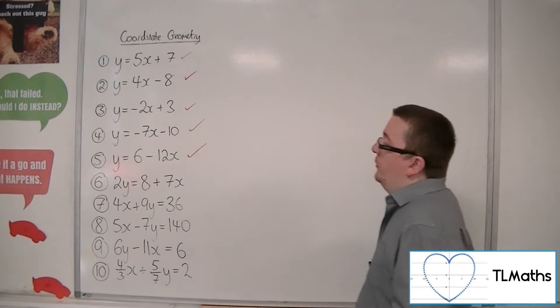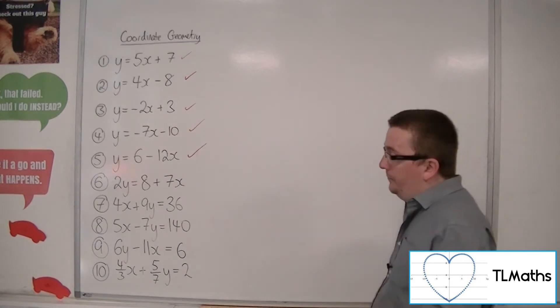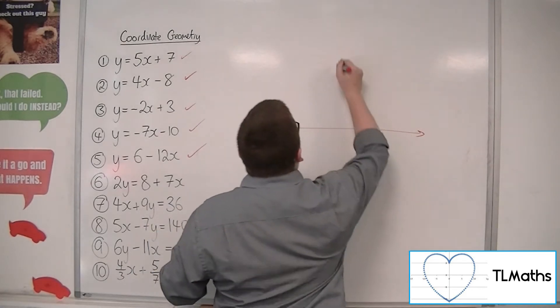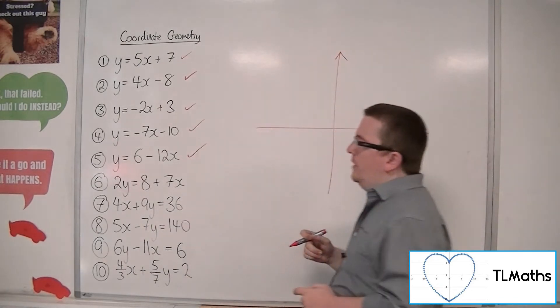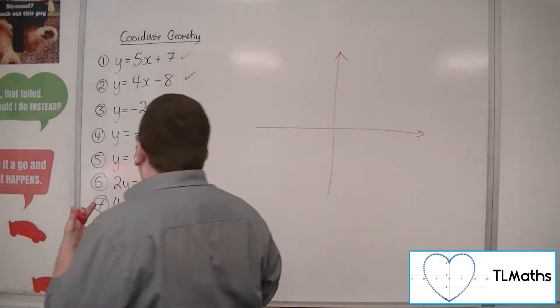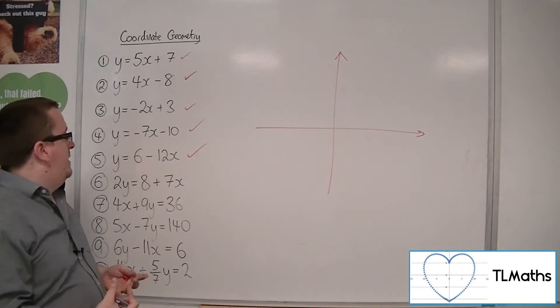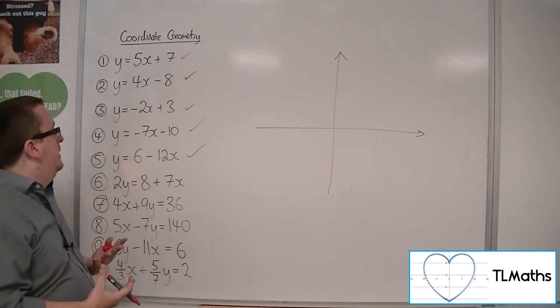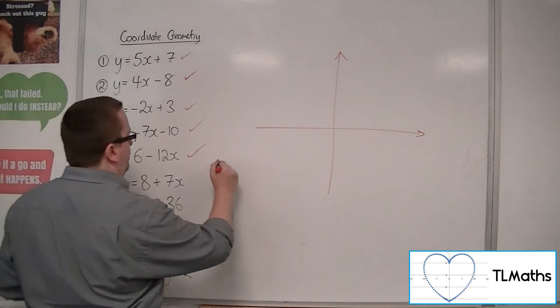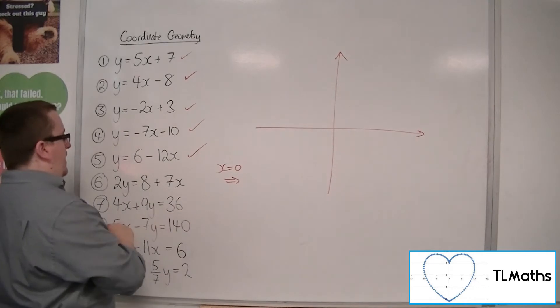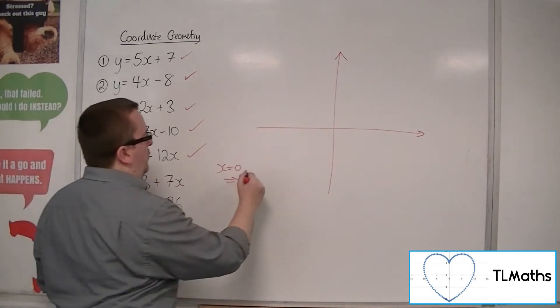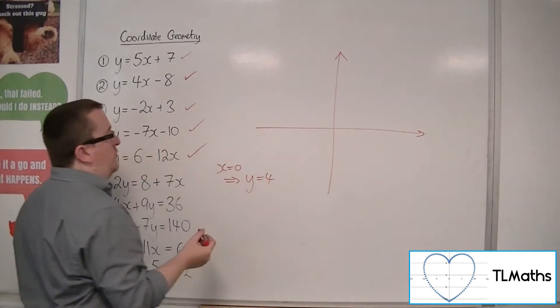Right, now number 6, 2y equals 8 plus 7x. So with these, we can't immediately read off the y-intercept or the gradient. So you could rearrange it first and do it that way. I prefer not to. I prefer to just go straight in. What happens when x is 0? What happens when y is 0? So when x is 0, okay, you can cover it up. And we get 2y equals 8. So y must be 4. So it's crossing through the y-axis at 4.